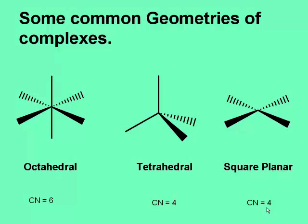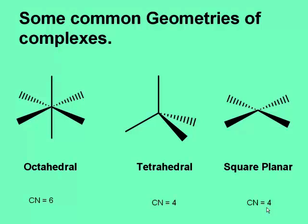Now remember that transition metal complexes can adopt different geometries. For instance, complexes with six monodentate ligands usually adopt the octahedral geometry. Complexes with four monodentate ligands would most commonly adopt either a tetrahedral or a square planar geometry. Crystal field theory can be used to describe the bonding in each of these types of complexes, and the bonding in each would differ slightly.